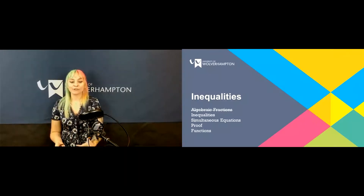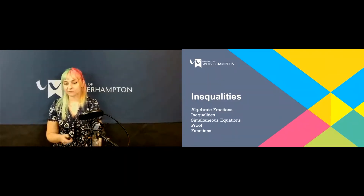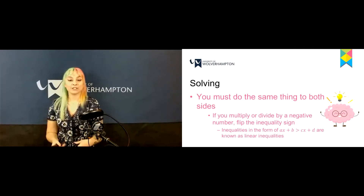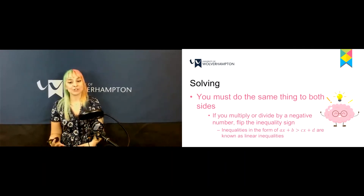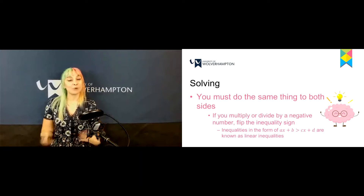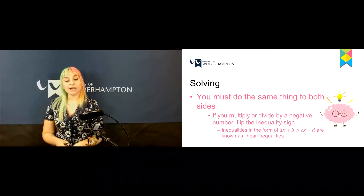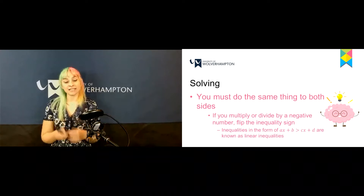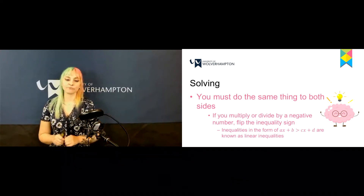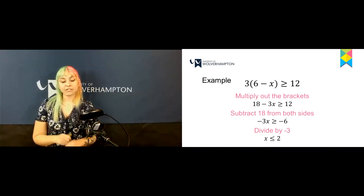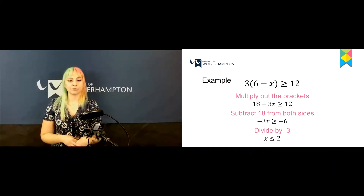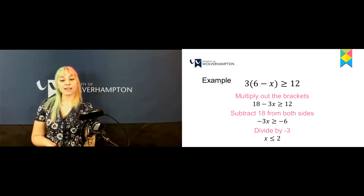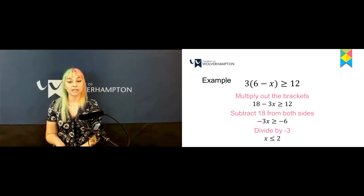The next topic is inequalities. To solve them, you do the same thing to both sides of the equation. If you multiply or divide by a negative number, remember to flip the inequality sign. Looking at this example, we have 3(6 minus x) is greater than or equal to 12.